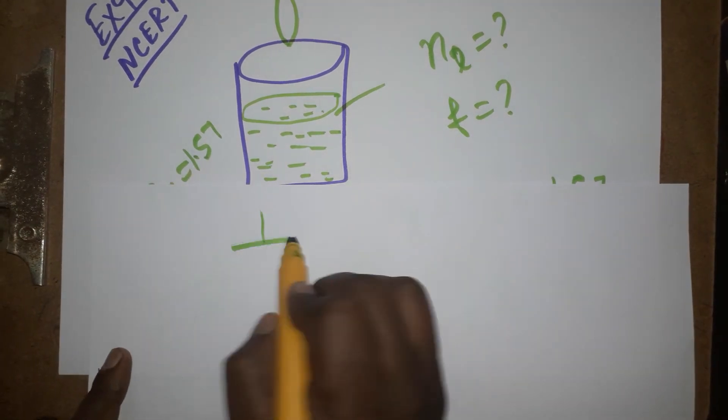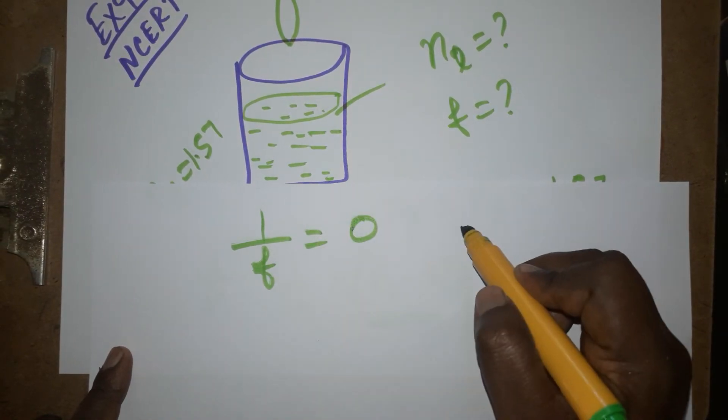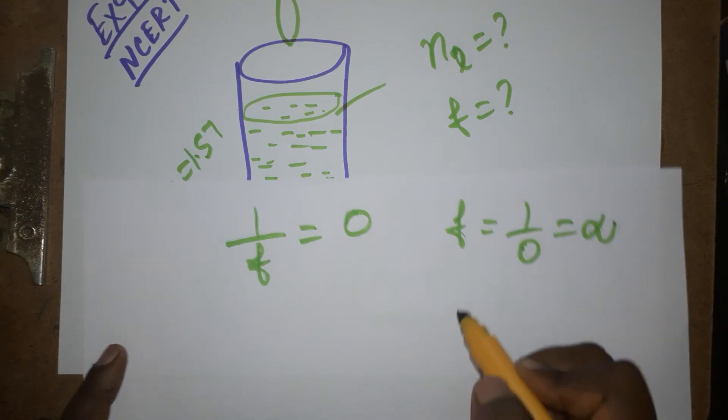We can take this as focal length. 1 by focal length equals zero, so focal length equals 1 by 0, which is infinite. It will be acting as a transparent medium.